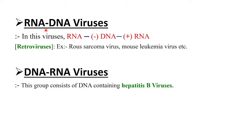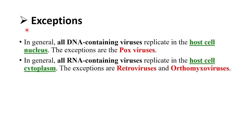RNA-DNA viruses: in these viruses, RNA synthesizes DNA and DNA synthesizes RNA. Retroviruses belong to this group; examples include Rous sarcoma virus and mouse leukemia virus. DNA-RNA viruses: this group consists of DNA-containing Hepatitis B viruses. As an exception to the general rule — that all DNA-containing viruses replicate in the host cell nucleus — pox viruses are an exception and replicate in the cytoplasm. Retroviruses and orthomyxoviruses are also exceptions to this rule.